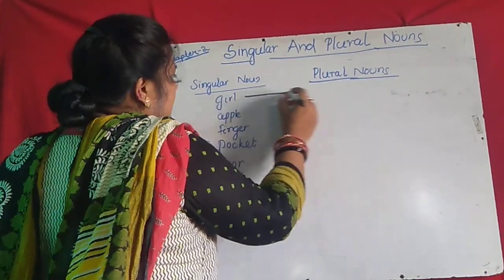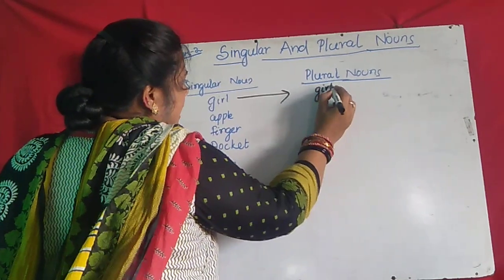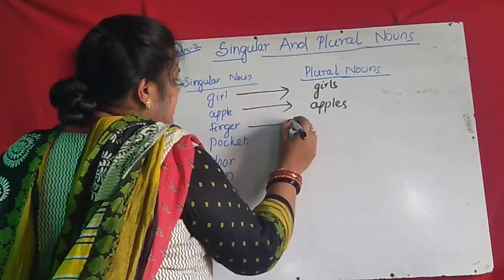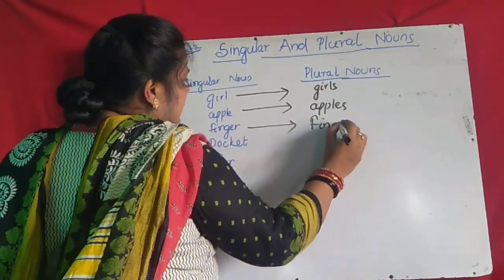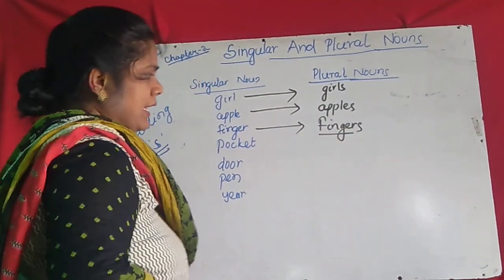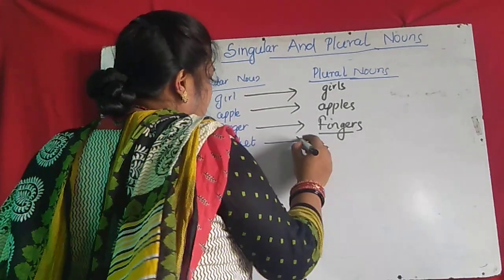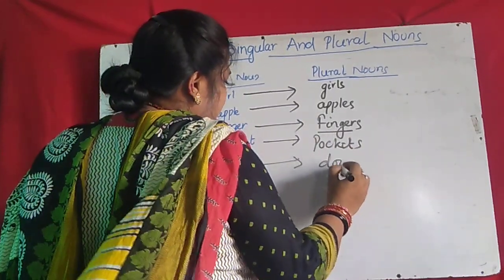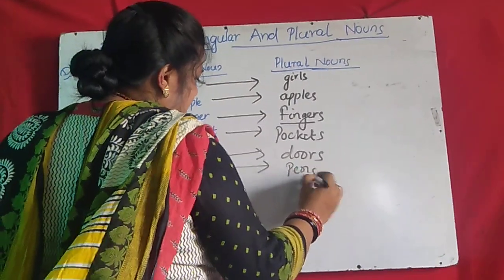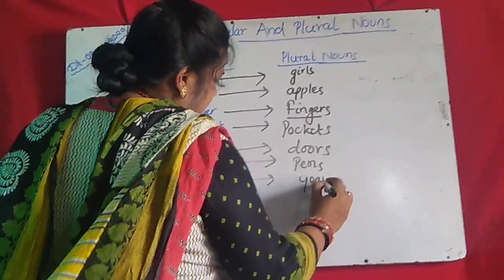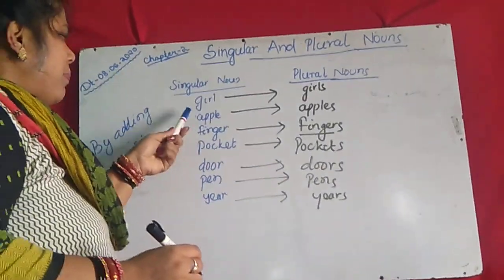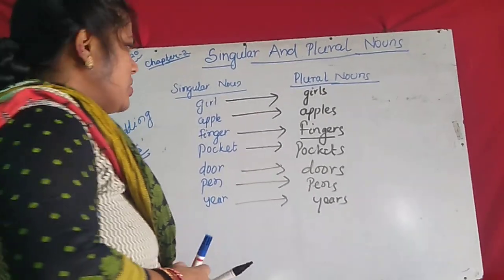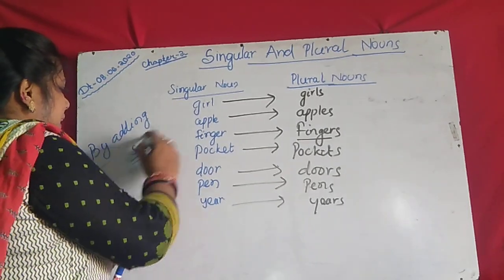First, in 'girl' you add S — plural noun will be 'girls.' Simply add S. 'Apple' becomes 'apples.' 'Finger' — finger is your main spelling and for plural you add S, making 'fingers.' Then 'pocket' — add S — 'pockets.' 'Door' becomes 'doors.' 'Pen' becomes 'pens.' 'Ear' becomes 'ears.' So girl, apple, finger — all these words change to plural when you simply add S at the end. This is the first rule: by adding S.